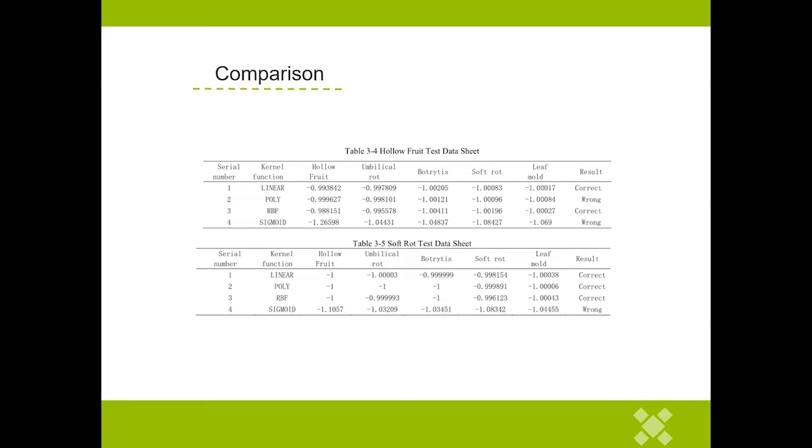Parameter optimization. The gamma parameter is the parameter that comes with the function after selecting the RBF function as the kernel. It implicitly determines the distribution of data after mapping to the new feature space. The larger the gamma, the fewer the support vectors, and the smaller the gamma value, the more support vectors. The number of support vectors affects the speed of training and prediction.